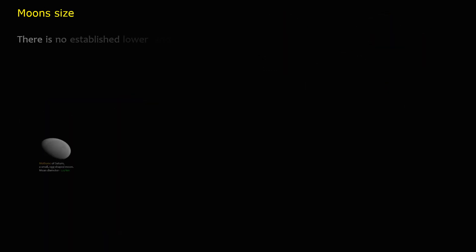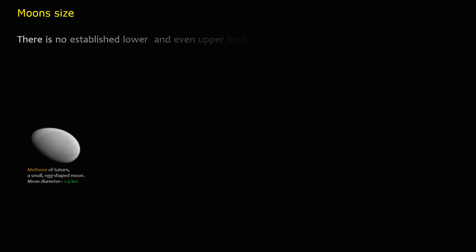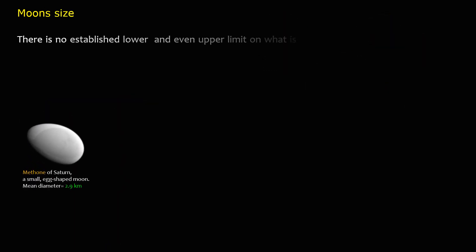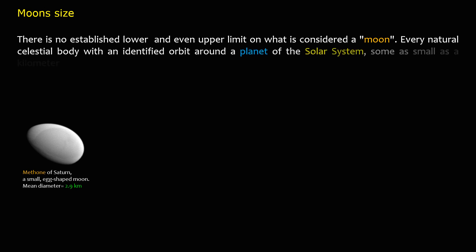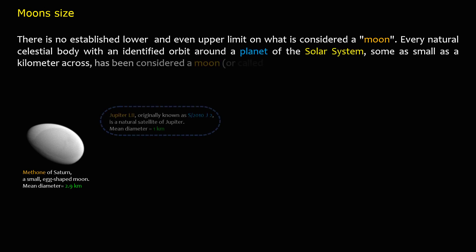There is no established lower — or even upper — limit on what is considered a moon. Every natural celestial body with an identified orbit around a planet of the solar system, some as small as a kilometer across, has been considered a moon or called a moonlet.